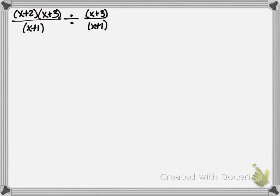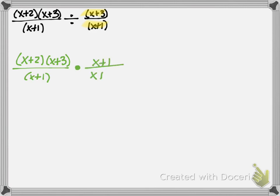So my first example here we don't have to factor because it's all factored for me already. All we're going to do is flip the second fraction — by second fraction I mean this one. Since I'm not doing anything to the first fraction, I'm just going to write that down: (x+2)(x+3) over (x+1). We're going to change this to multiplication and flip this fraction.